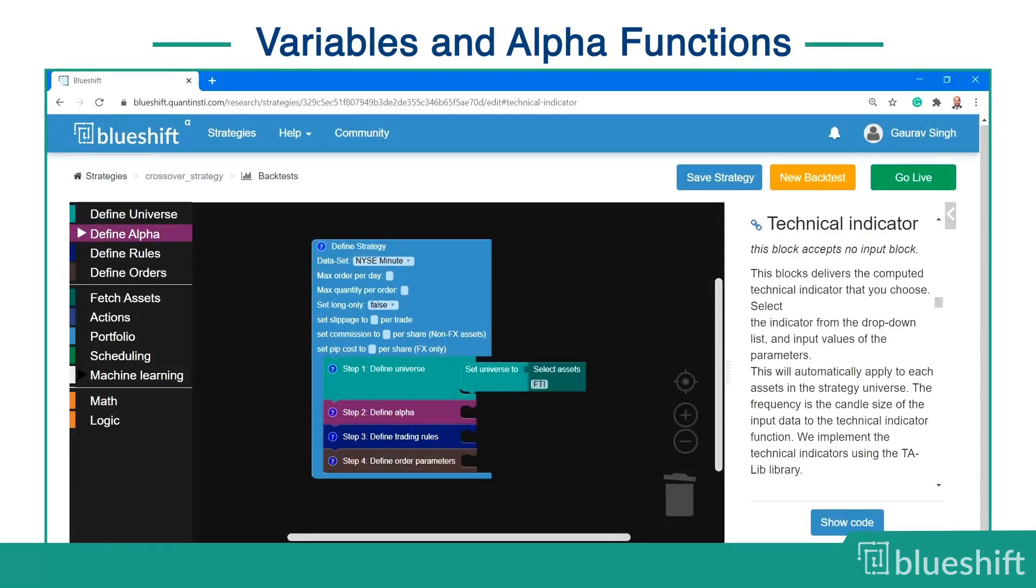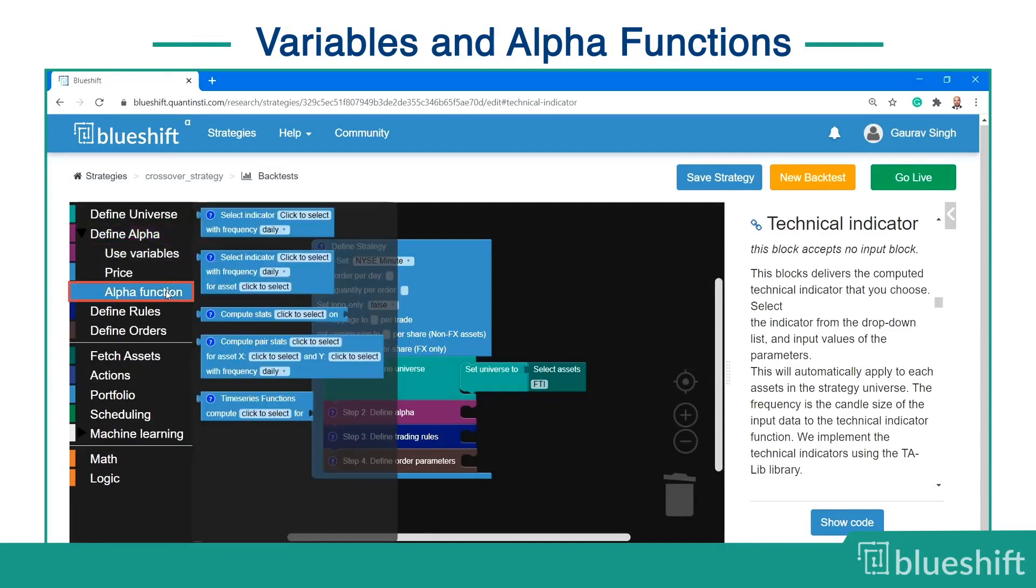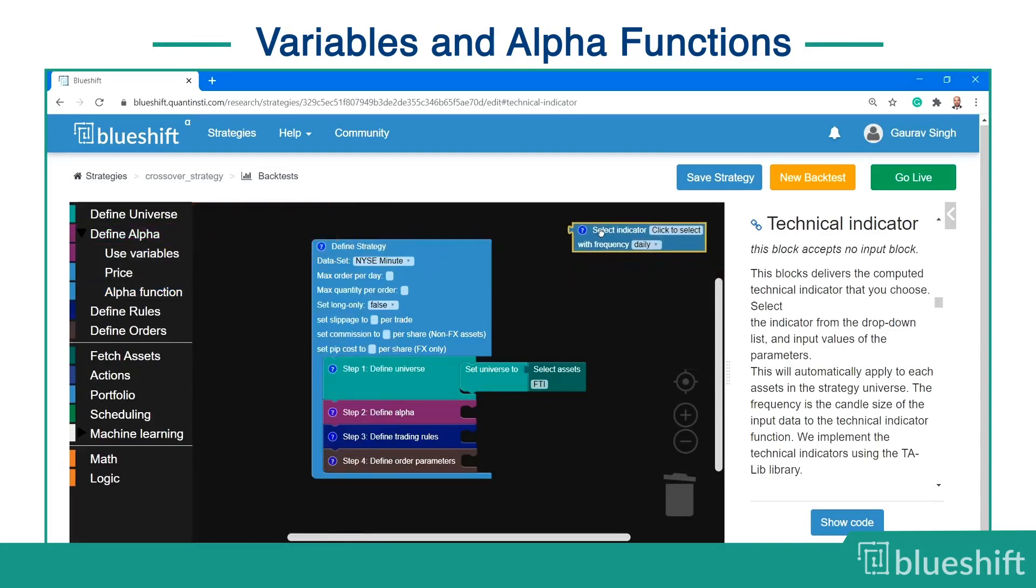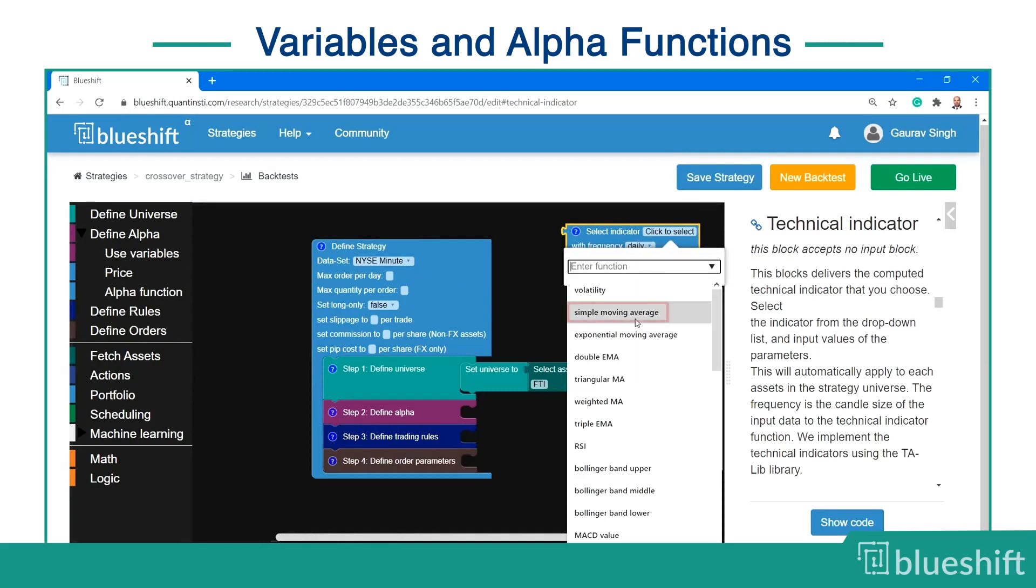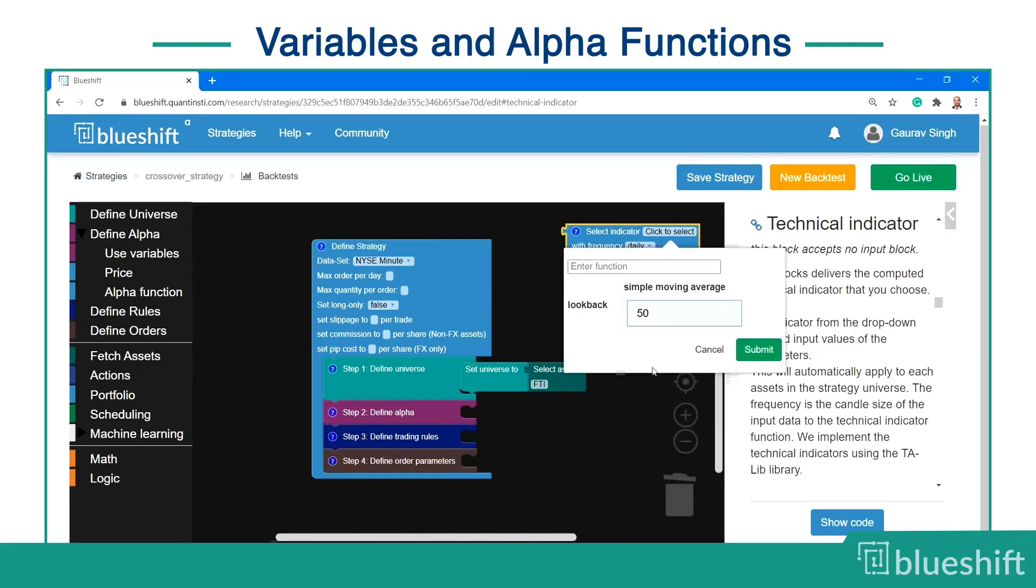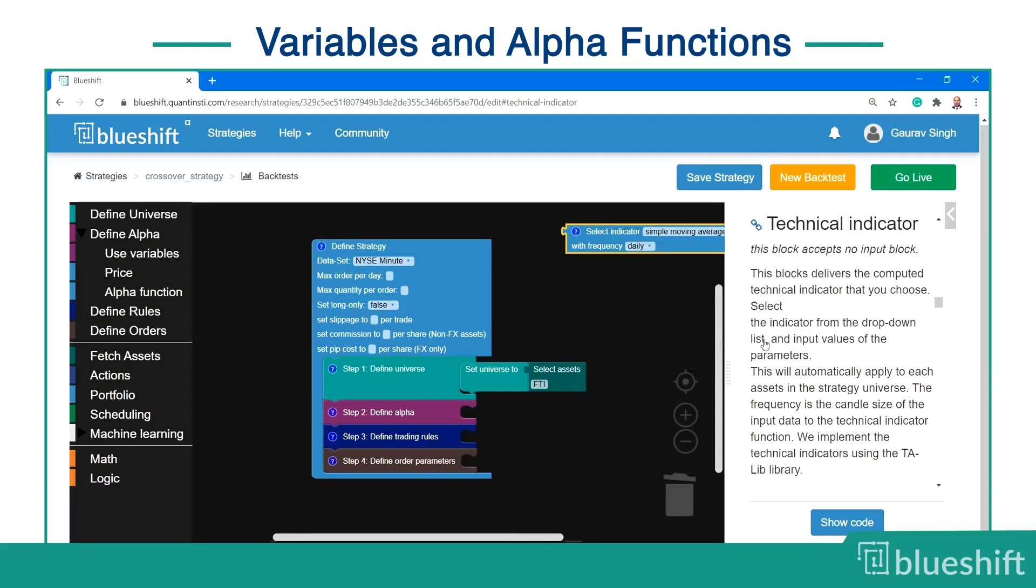The first step is to compute the 50-day moving average. You can go to define alpha and then select alpha function. Click the select indicator blue colored block and drag onto the workspace. On clicking here, you will get a list of technical indicators. Select simple moving average. You enter 50 as the lookback period, as we are computing a 50-day moving average, and click submit. You can leave the frequency as daily, since it is for 50 days. If it was for 50 minutes, you can select the frequency as minute.